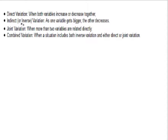Indirect variation, or inverse variation as it's also called, is when one variable gets bigger, the other decreases. Joint variation is when more than two variables are directly related. And combined variation is when a situation includes both inverse variation and either direct or joint variation.